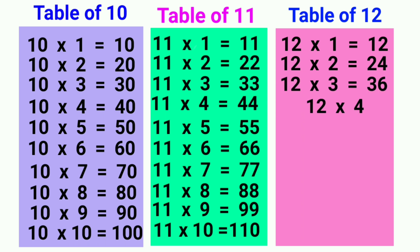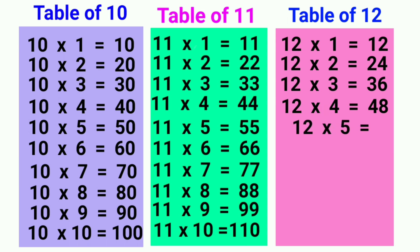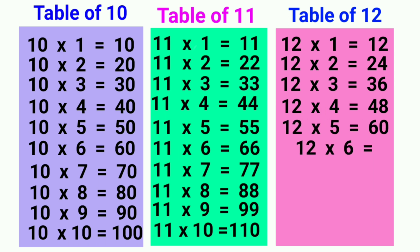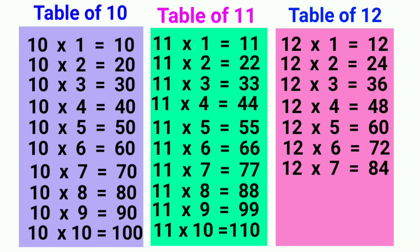12 fours are 48, 12 fives are 60, 12 sixes are 72, 12 sevens are 84, 12 eights are 96,